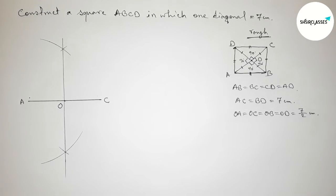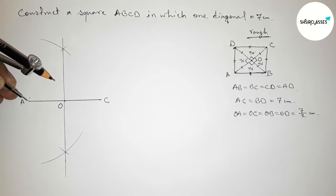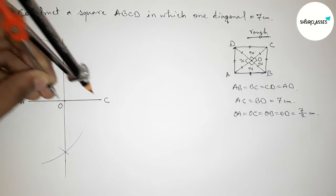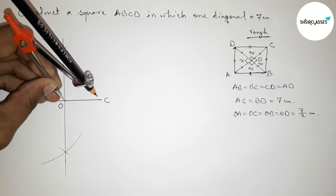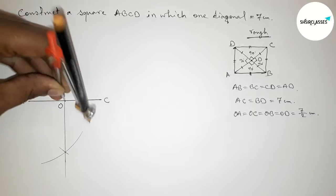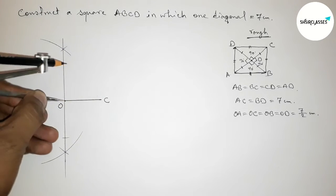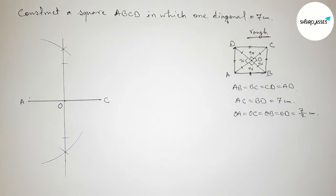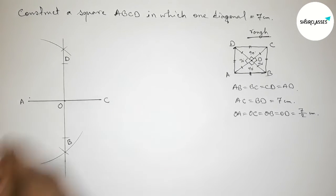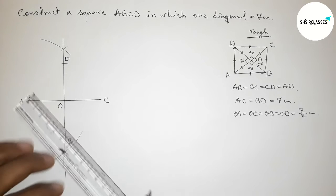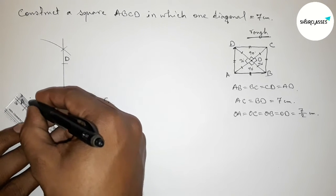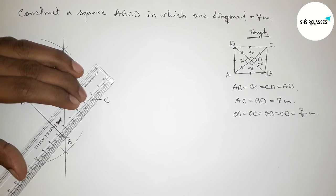Now checking: OA equals OC — perfectly equal. Cutting here and here to mark the equal lengths. Taking point B and point D on the perpendicular bisector, each at distance 7 by 2 centimeters from O. Now joining side AB first, then joining side BC.